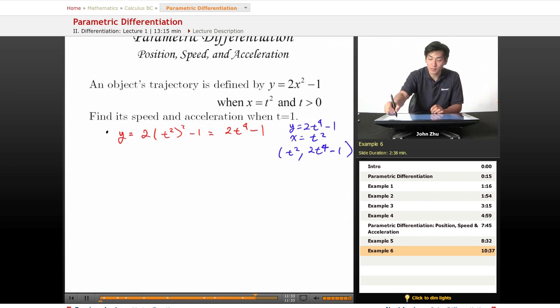So now we can go ahead and find the speed at t equals 1.